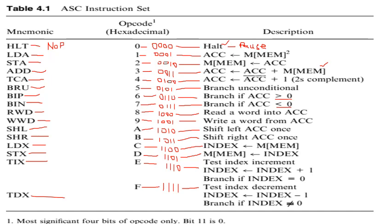The next instruction is BRU, which represents the branch unconditional instruction, with opcode 5 and binary representation 0101. If we want to jump unconditionally to any memory location during our program, we use the BRU instruction to branch.